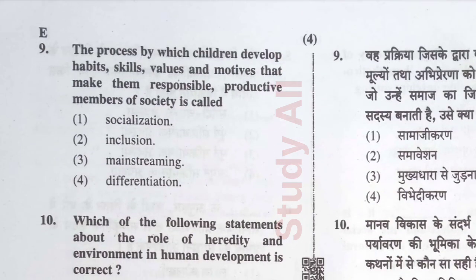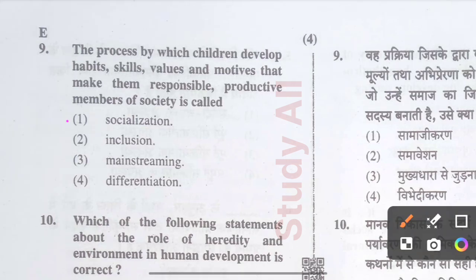Question number nine: The process by which children develop habits, skills, values, and motives that make them responsible and productive members of society is called — the correct option is option A: socialization.